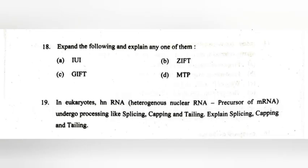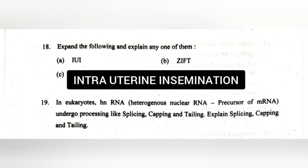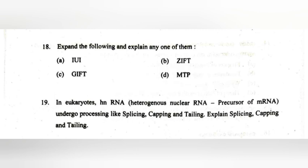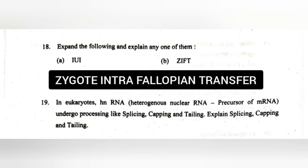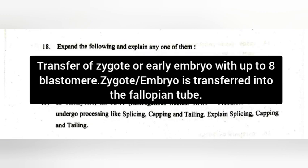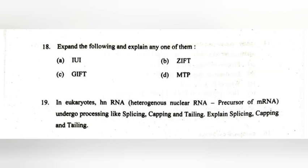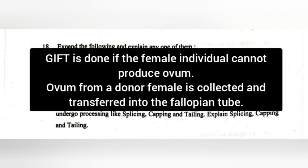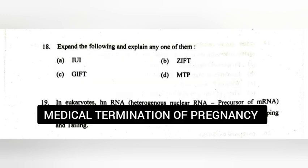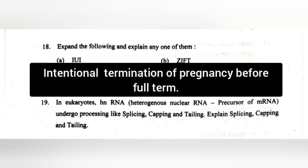18. Explain the following and explain any one of them. A. Intrauterine insemination — Semen collected from the male partner is artificially introduced into the uterus of the female. B. Zygote intra-fallopian transfer — Transfer of zygote or early embryo with up to 8 blastomeres into the fallopian tube. C. Gamete intra-fallopian transfer — Done if the female individual cannot produce ovum; ovum from a donor female is collected and transferred into the fallopian tube. D. Medical termination of pregnancy — Intentional termination of pregnancy before full term.